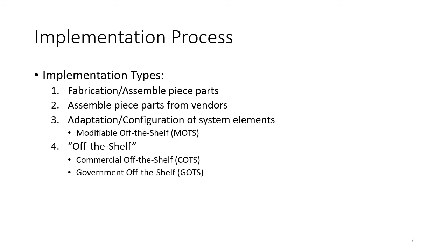Implementation processes can be categorized in four ways. The basic way is to fabricate piece parts and then assemble them — taking raw materials or writing code from scratch to develop the elements. The second type is to purchase piece parts from supply chain vendors and then assemble them, which is also part of the implementation process.